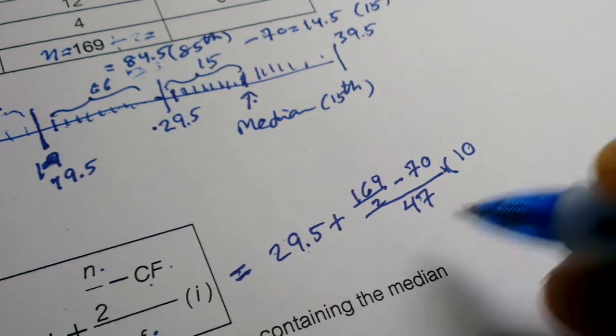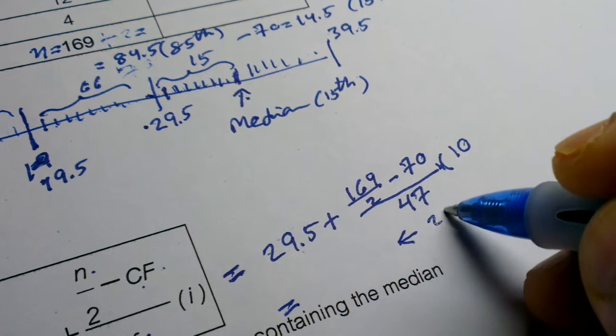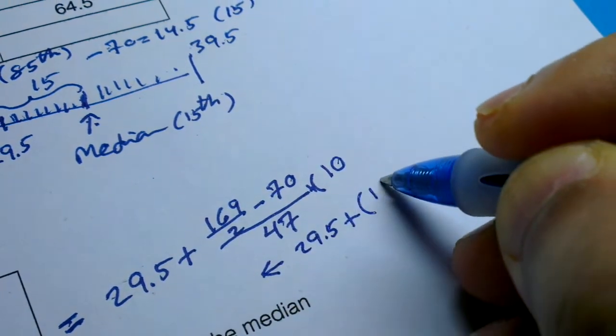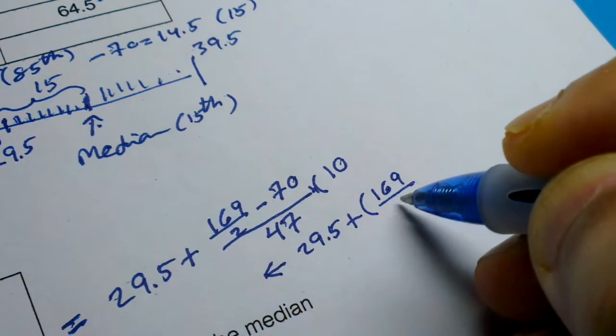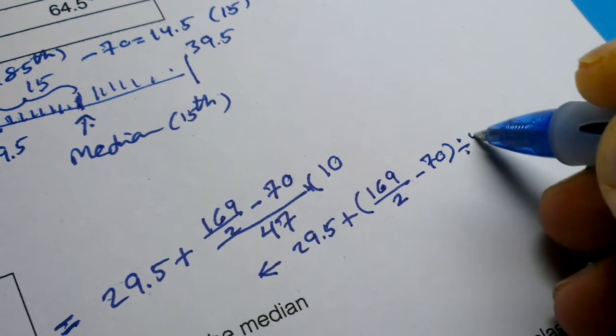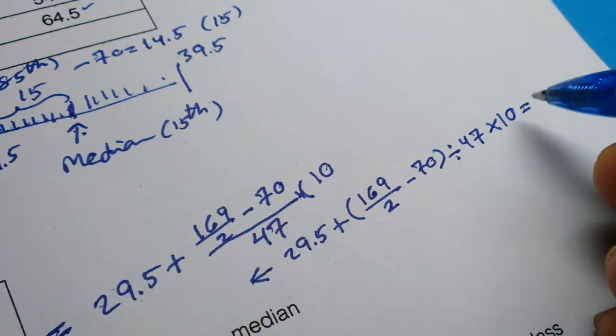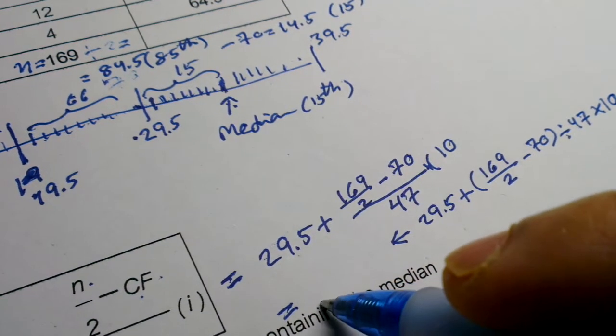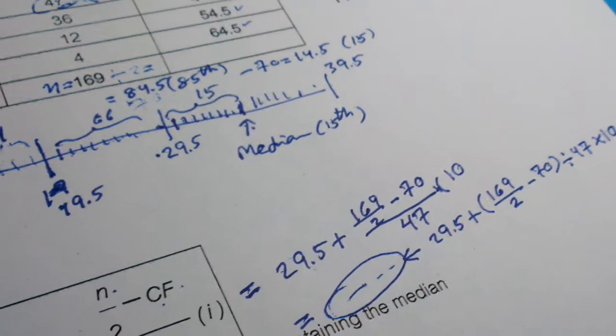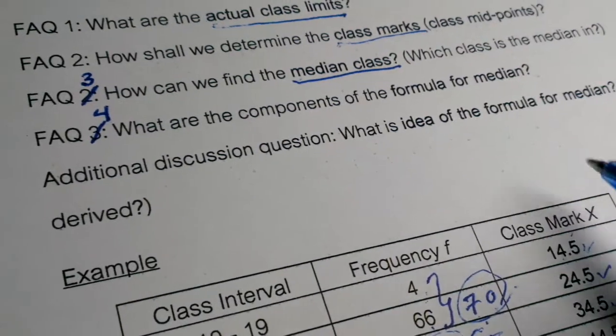Now you use calculator. 29.5 plus. You press calculator like this. 169 divide 2 minus 70. You divide 147. Then multiply 10. Press equal to. You will get the answer. This estimated median.